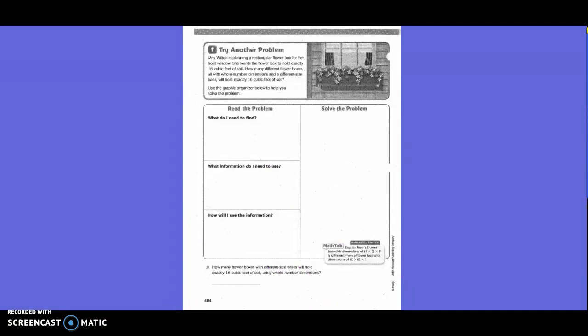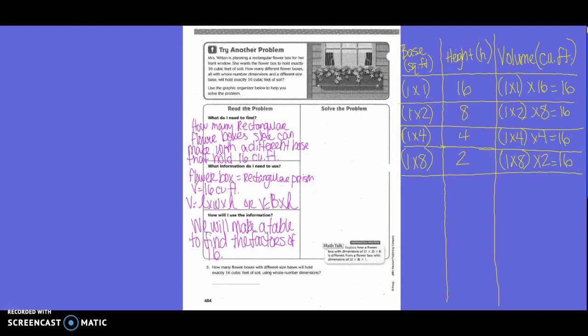Try another problem. Mrs. Wilkin is planning a rectangular flower box for her front window. She wants the flower box to hold exactly 16 cubic feet of soil. How many different flower boxes, all with a whole number of dimensions and a different size base, will hold exactly 16 cubic feet of soil? Use the graphic organizer below to help you solve the problem. What do I need to find? How many rectangular flower boxes she can make with a different base that holds 16 cubic feet. What information do I need to use? You know that the flower box needs to be a rectangular prism. The volume is 16 cubic feet. And we can use our formulas. Volume equals length times width times height or volume equals base times height.